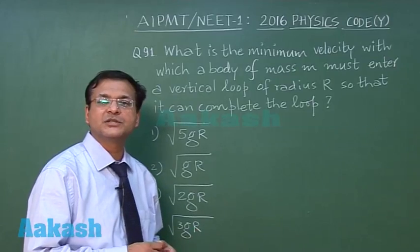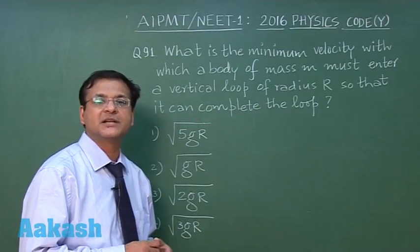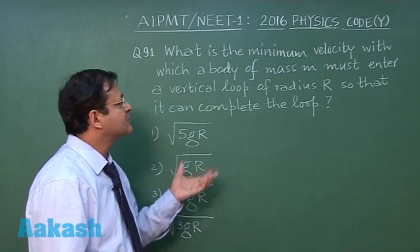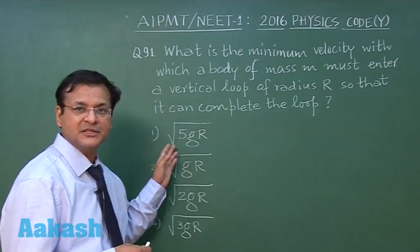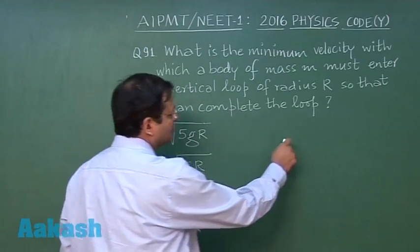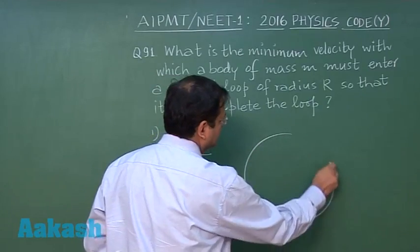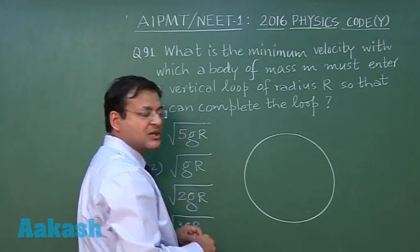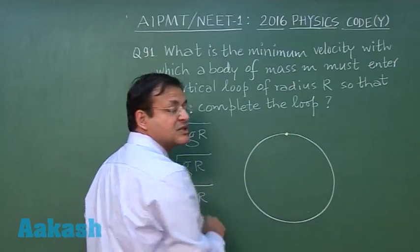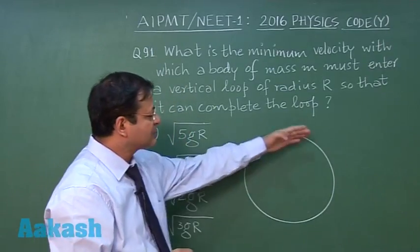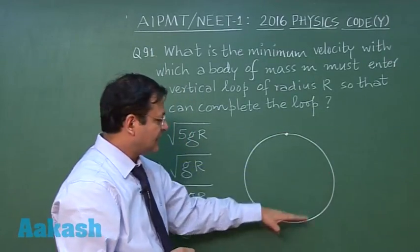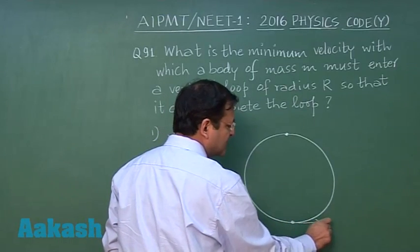This is a straightforward, result-oriented question. Most students remember the direct result as √5gR. If you try to remember the expressions: at the top, the minimum speed is √gR. At this point it is √3gR, and at this point the minimum speed must be √5gR.